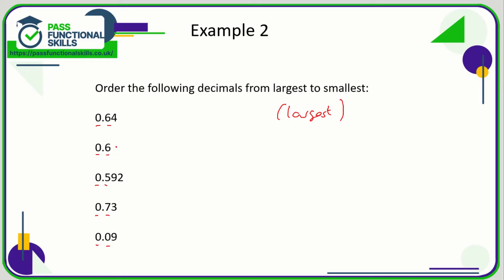What is bigger? What's biggest out of 6, 6, 5, 7, and 0? Seven. So the largest decimal is 0.73. Let's go back and have another look. We've got 6, 6, 5, and 0.